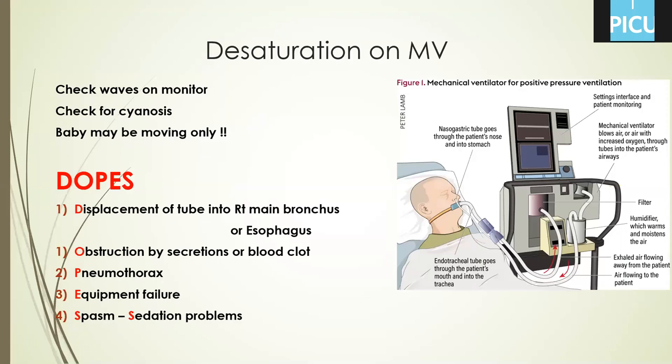Pneumothorax — you will suspect it clinically. You should ask for an X-ray but don't wait because it's an emergency. If you suspect pneumothorax, you will find bulging on one side and diminished air entry over the affected side. Do a trial aspiration: insert a needle into the affected side at the second intercostal space, mid-clavicular line. Saturation will improve if air comes out, and then you can prepare a chest tube. You can abbreviate this approach as DOPS, arranged from ventilator, connections, ETT tube, patient airway, and patient lung.